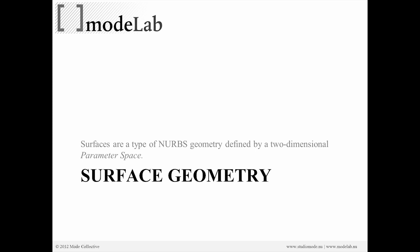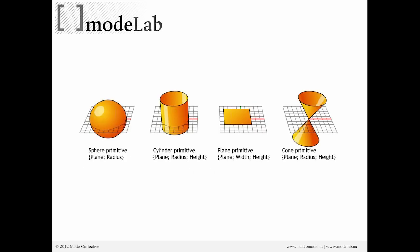Surfaces in Rhino are a type of NURBS geometry defined by a two-dimensional parameter space. That might sound a little funky as a way to describe shape, but really, no matter what the shape that we see in Rhino is, if these are all surfaces, they all have a consistent property in that they have two directions.